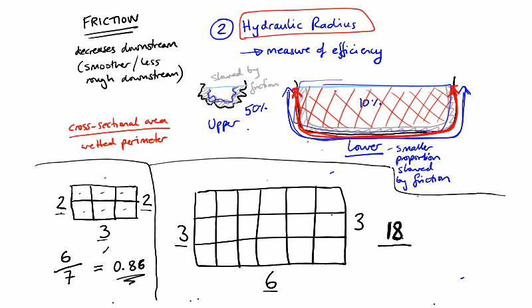So 12 is the wetted perimeter. So if we just divide 18 by 12, that comes out as 1.5.